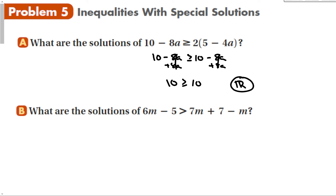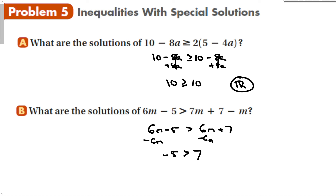What are the solutions for 6m minus 5 is greater than 7m plus 7 minus m? This simplifies to 6m minus 5 is greater than 6m plus 7. You can't just look at this and say no solution like you could with an equation. When we subtract 6m, we have negative 5 is greater than 7, which is not true — so this has no solution.